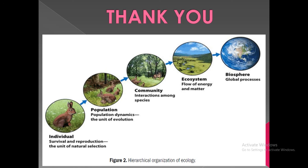In summary: the individual is the unit of natural selection that survives and reproduces. Population is the unit of evolution and involves population dynamics. Community involves interactions among different species. The ecosystem involves the flow of energy and matter. The biosphere represents global processes. Thank you.